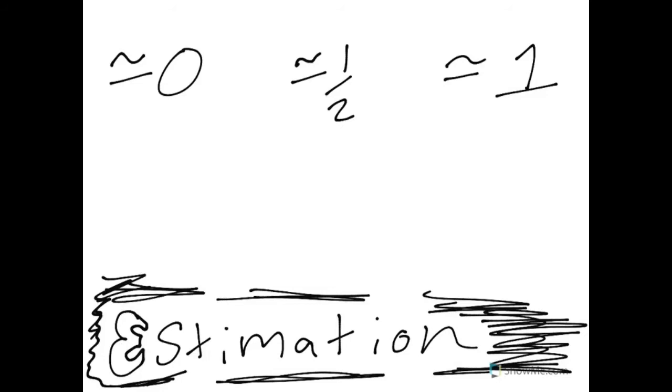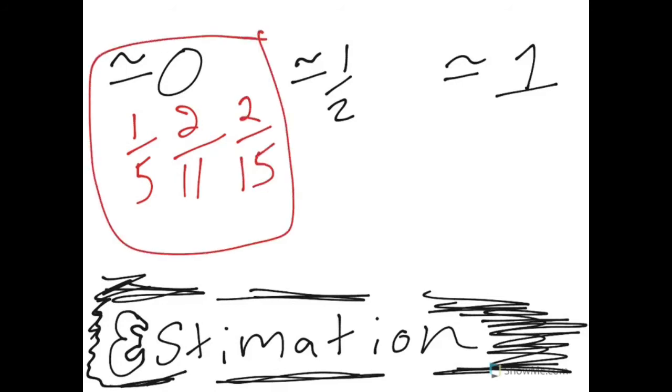Estimation. There are certain fractions, for example 1/5, that's closer to 0 than it is to half or to 1 whole. Now if I had, for example, 2/11, that's also closer to 0 than it is to 1/2 or 1 whole. 2/15, that would all go in that close to 0. They're closer to 0 than they are to a half or to a whole. If you look at 5/11, 5 is almost half of 11. It's not exactly, that's why we're talking about estimation.